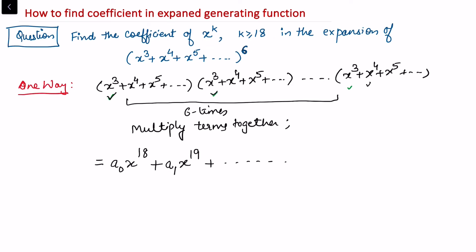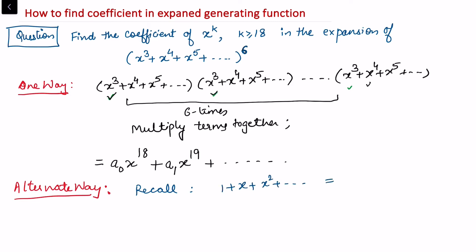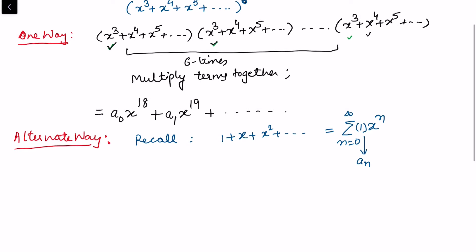I'm going to write a general form and present a better alternate way of finding the coefficients. For the alternate way, let me first recall: for example, we have the expansion 1 + x + x² + ... This can be written in summation form as the sum of xⁿ for n from 0 to infinity, where the coefficient is 1, meaning the nth coefficient is 1.